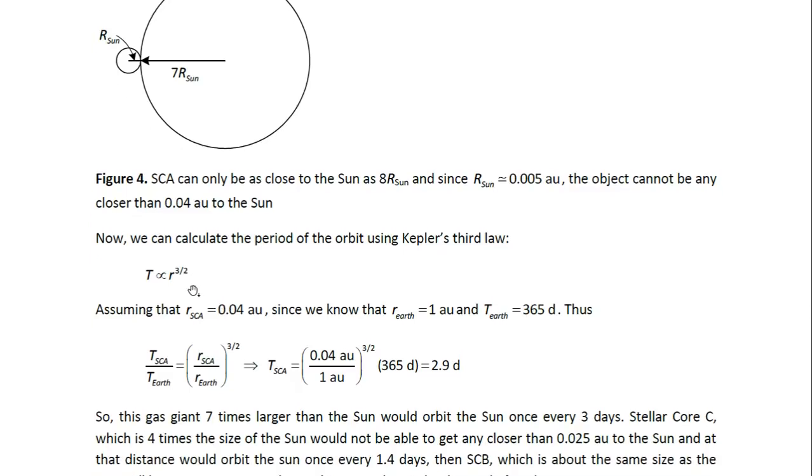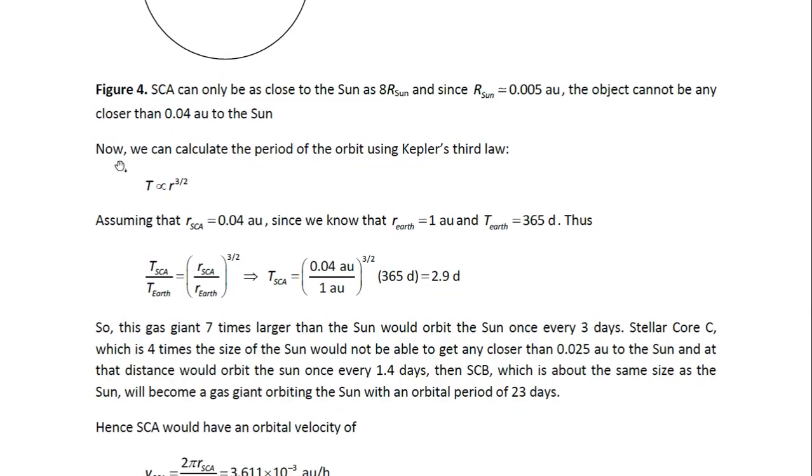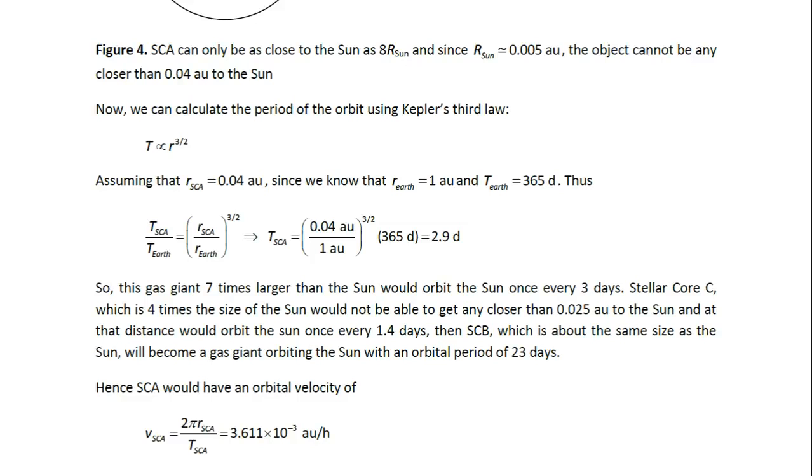Then from that we can calculate the orbital period from Kepler's third law, which basically tells us that the period is proportional to r to the 3 over 2, or 1.5. So for the stellar core A with an orbital radius of 0.04 AU, and using the fact that the Earth's orbital radius is 1 AU and the Earth has an orbital period of 365 days, we can use this equation. We can use the ratio between the period for the stellar core and the Earth, and then we just have r_stellar core A divided by r_Earth. That's the Earth's orbital radius. So that would be 0.04 divided by 1 to the power of 3 over 2, or 1.5 times the Earth's orbital period, which is 365 days. If we multiply that out, we get 2.9 days. So this gas giant, seven times larger than the Sun, would orbit the Sun once every three days.